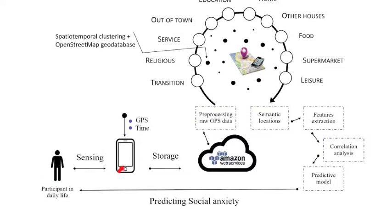In the system overview, individuals use their own handheld devices where GPS data and activity recognition are sensed and stored in Amazon AWS S3 storage. The raw GPS data are then parsed using a clustering algorithm into important semantic locations such as education, home, and other houses. These semantic locations feed into a feature extraction block, where features like location entropy and transition frequency are extracted for correlation analysis and predictive modeling.